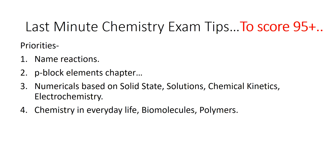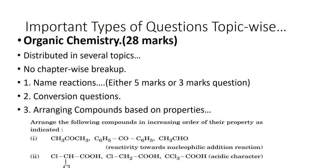Now, important types of questions topic-wise. Let's go to individual topic-wise questions - what type of questions are asked. I'm not going to discuss topics, just important questions. First, let's focus on organic chemistry which is 28 marks in your paper out of 70. Organic chemistry is distributed in several topics - no chapter-wise breakup is given.